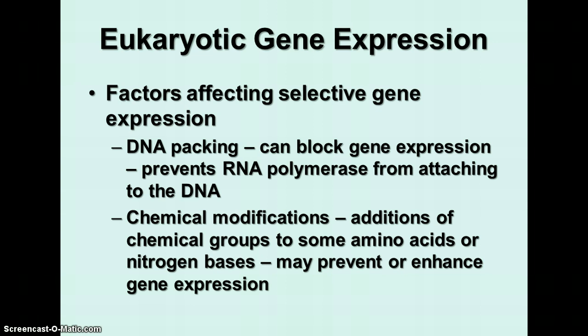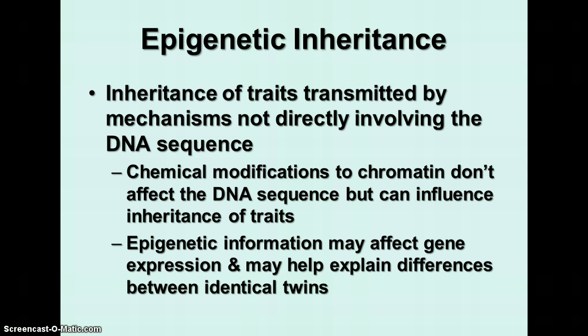There's also something called epigenetic inheritance — inheriting traits that are transmitted by things not directly involved with the DNA sequence. There is a SciShow video I want you to watch about this, and there is a Google Doc to complete along with it, plus a little quiz over epigenetics. Chemical modifications to the chromatin, like adding methyl groups to the sugars on the DNA, don't affect the DNA sequence itself, but they can influence the inheritance of some kinds of traits. Epigenetics may also help explain differences between identical twins, and it is one of the newest areas of genetic study.